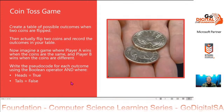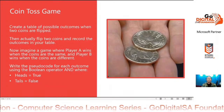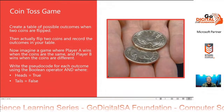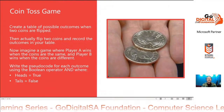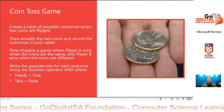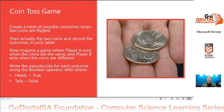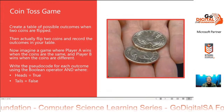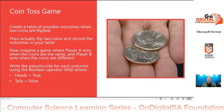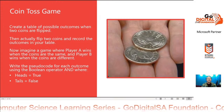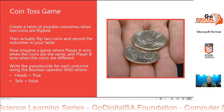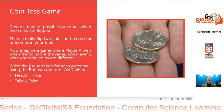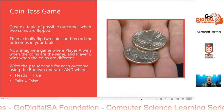So we're going to look at a coin toss game. Let's create a truth table of possible outcomes when two coins are flipped, then actually flip two coins and record the outcomes in your table. Imagine a game where player A wins when the coins are the same, and player B wins when the coins are different. Write the pseudocode for each outcome using the Boolean operator AND, where heads equals true and tails equals false.